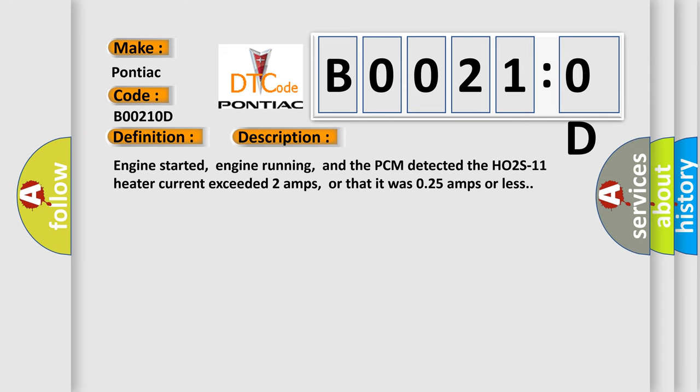Engine started, engine running, and the PCM detected the HO2S11 heater current exceeded 2 amps, or that it was 0.25 amps or less.